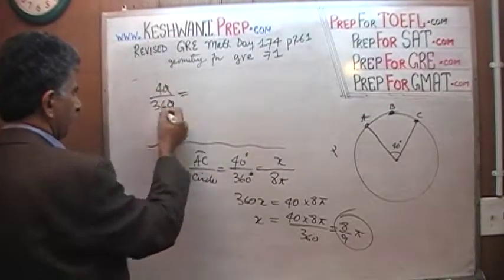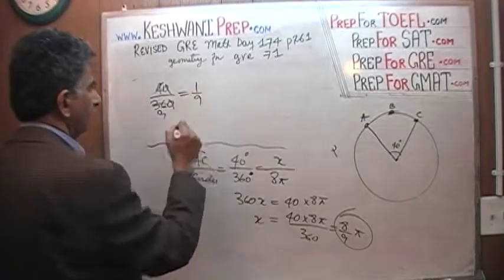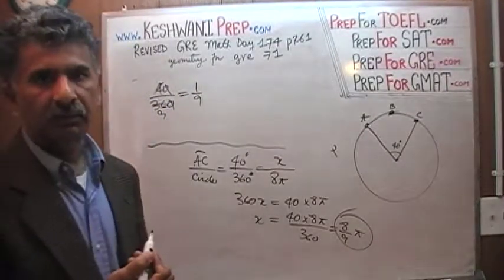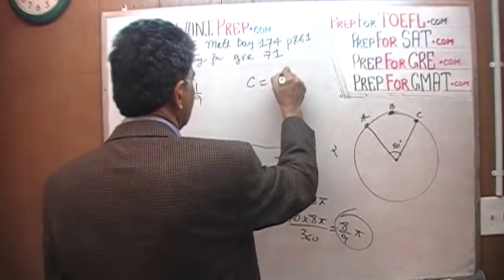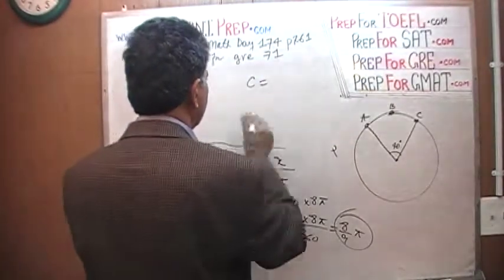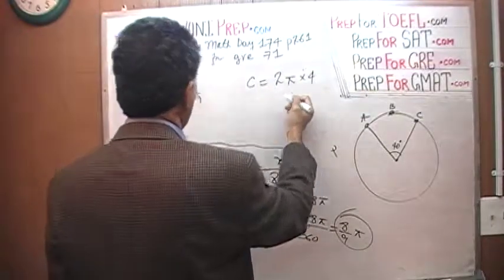Well, 40 degrees is what proportion of the circle? Again, zeros will cancel out, divide top and bottom, so we find out that 40 degrees is 1/9th of the circle.